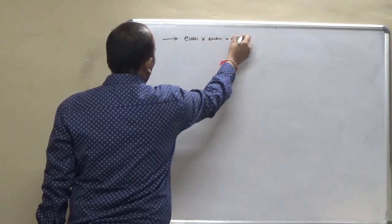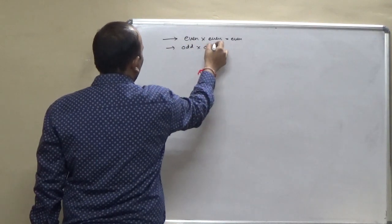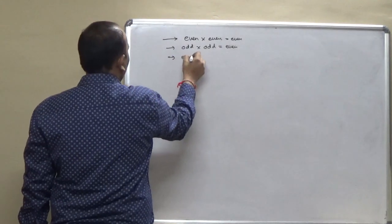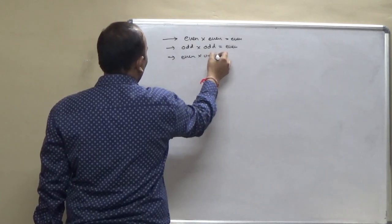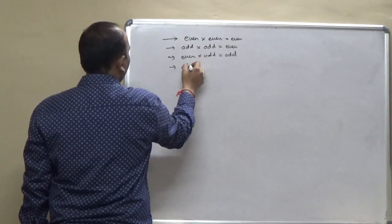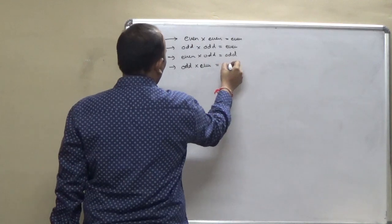Even to Even is equal to Even. Odd multiplied by odd is equal to Even. Even into odd is equal to odd. Odd into even is equal to odd.